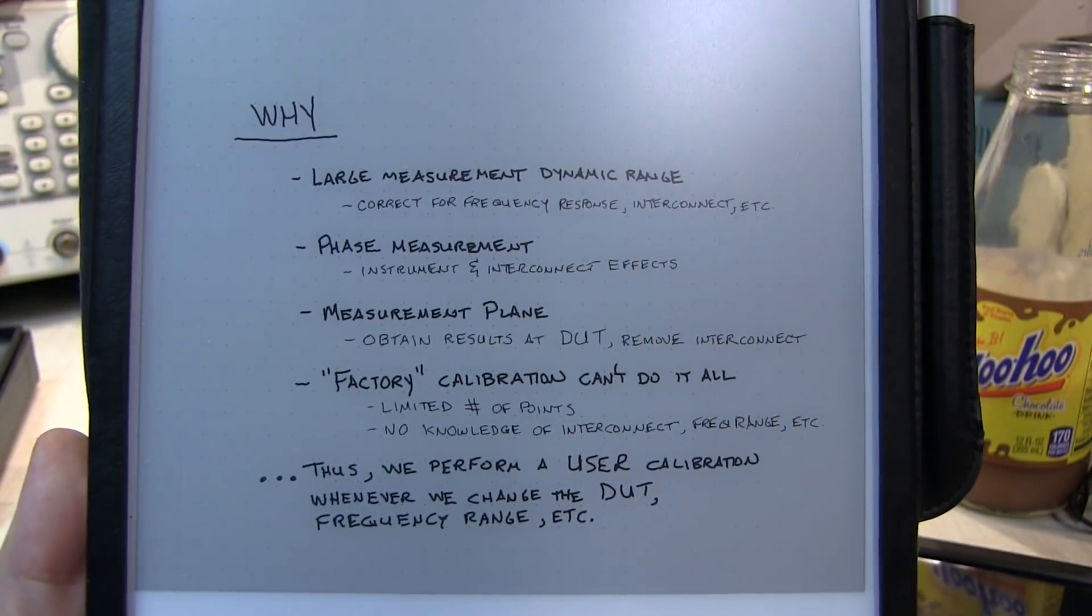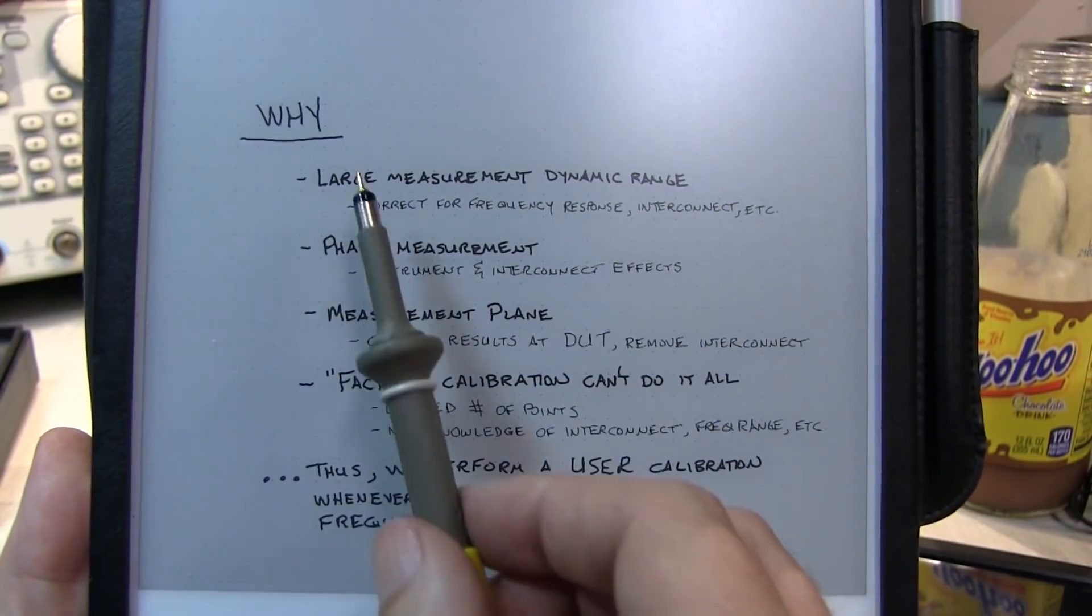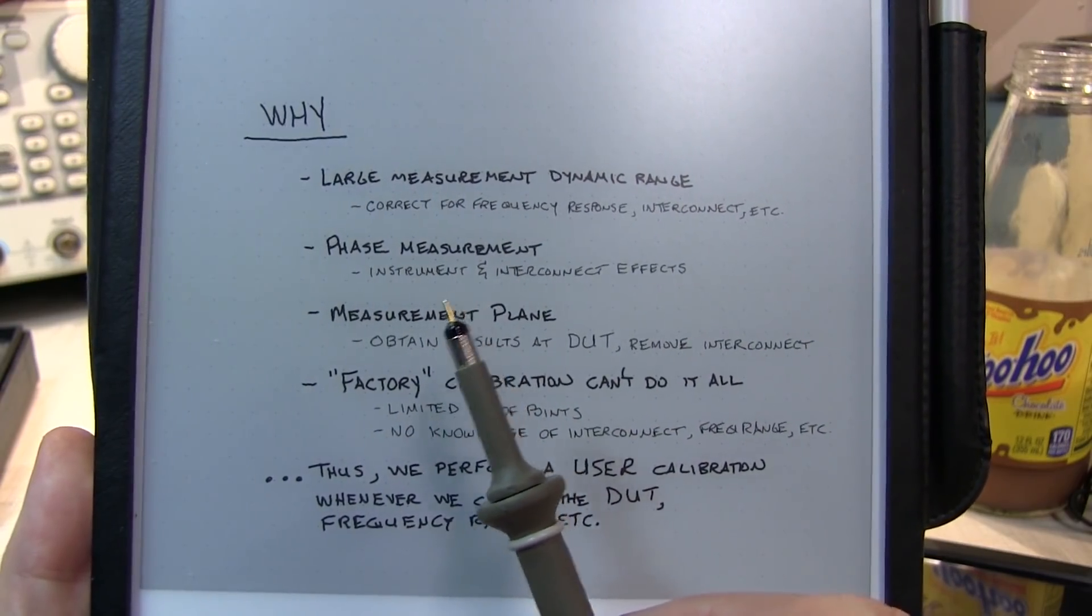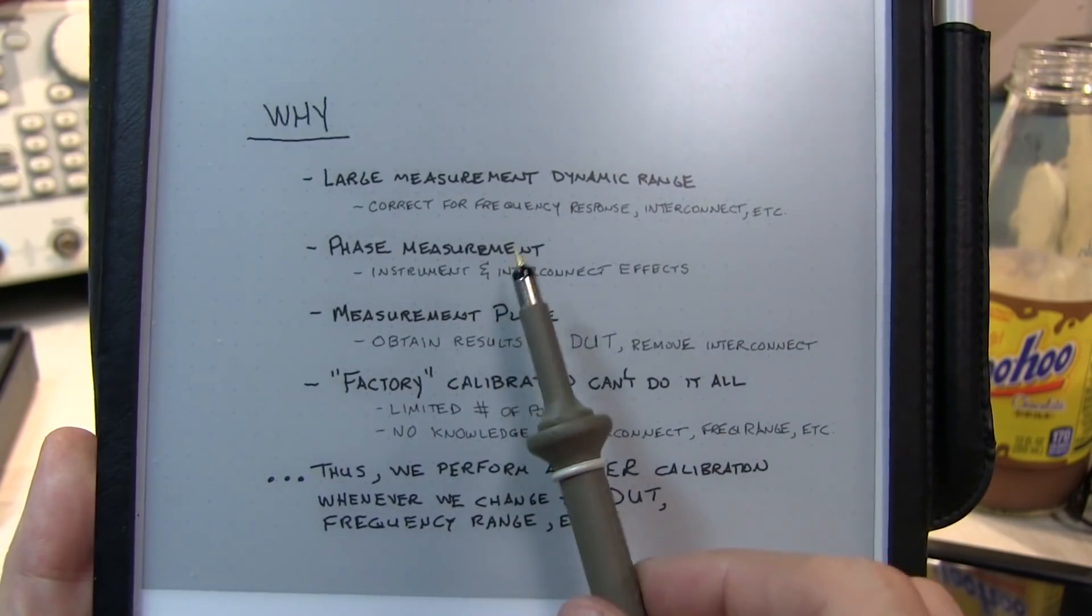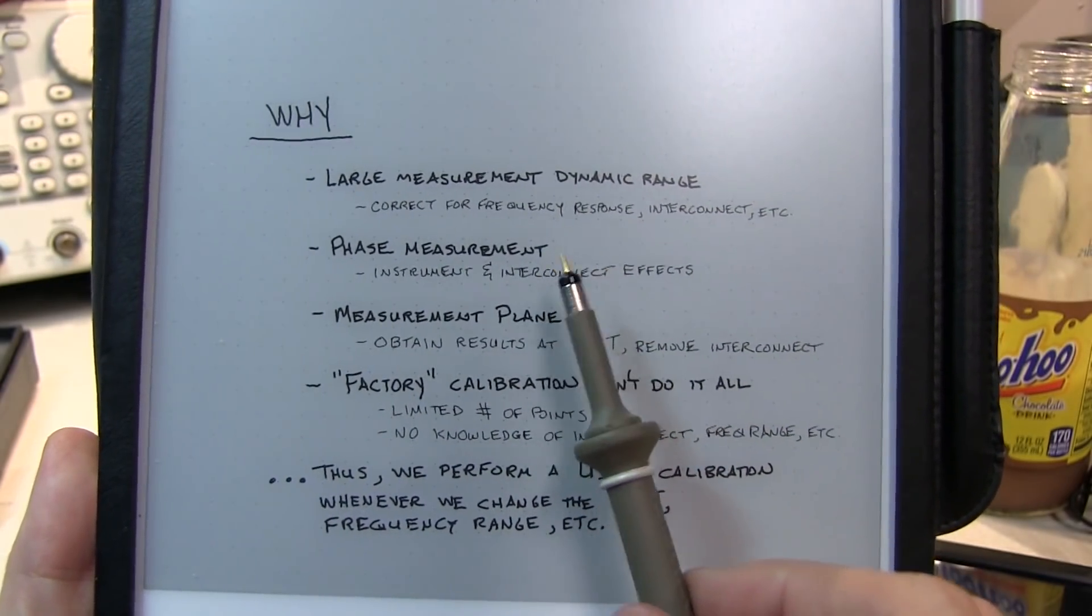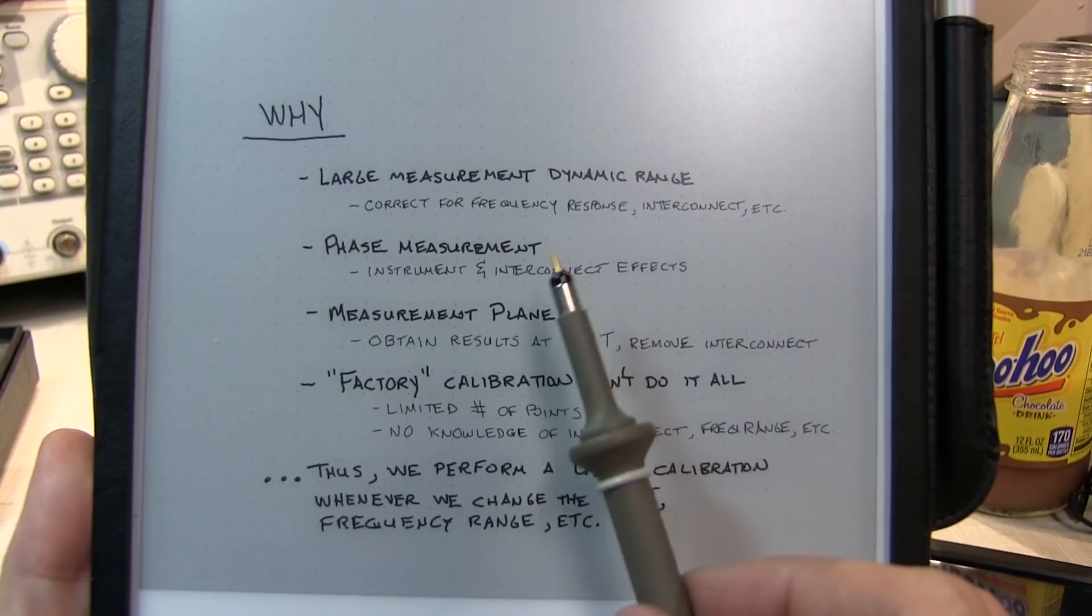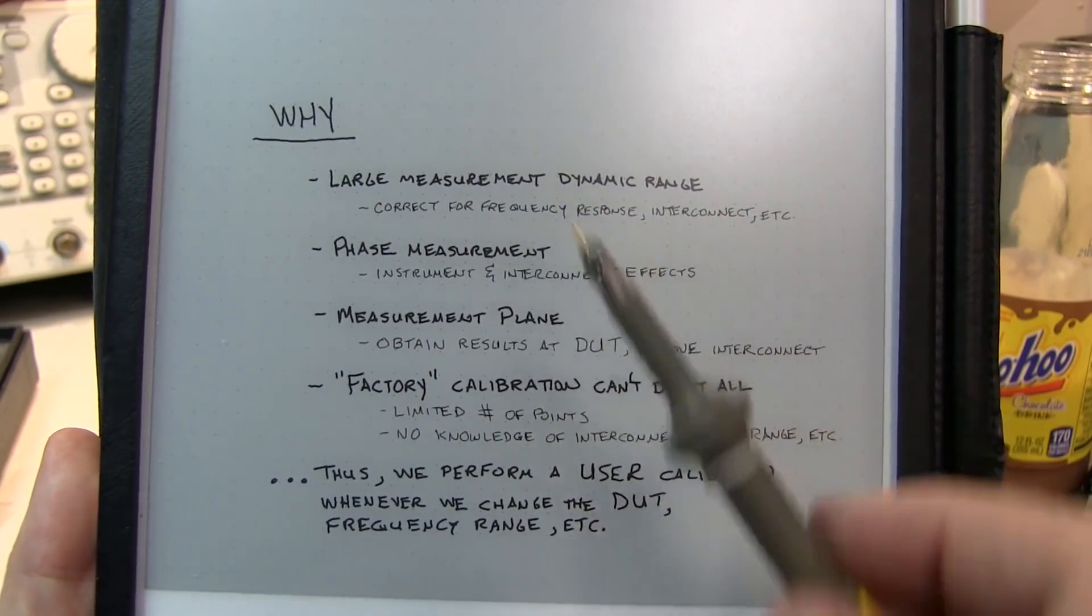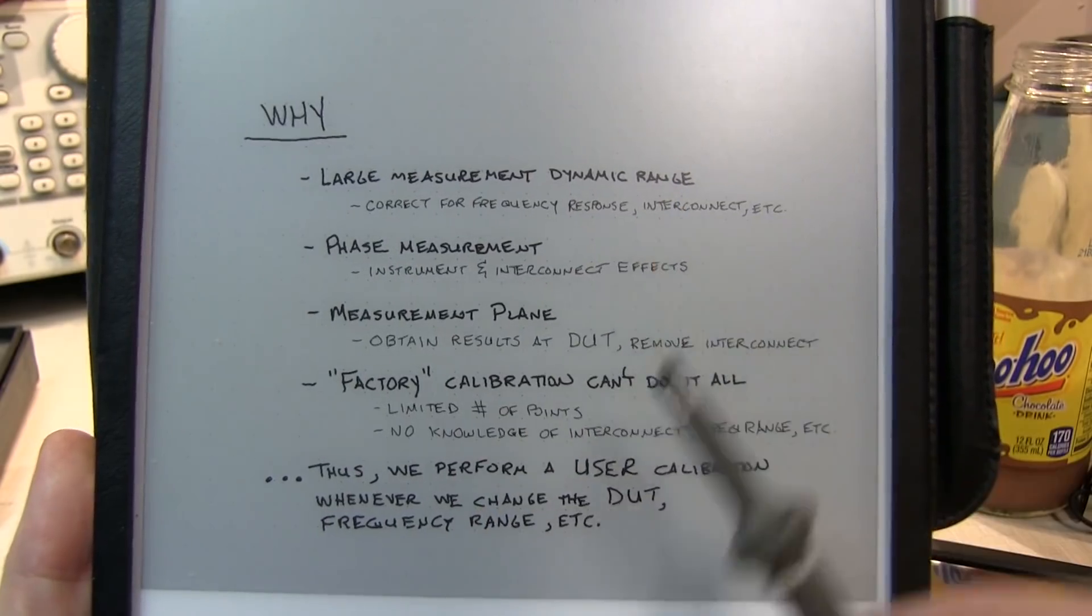Here are the major reasons why we need to calibrate a VNA. Number one is a VNA can give us a very large measurement dynamic range, 60, 80, 100 dB or more. So any minor variations in frequency response of the circuits inside the VNA and the interconnects can all affect the ability to achieve that dynamic range, so we need to correct for those things.